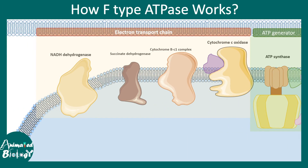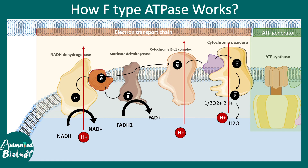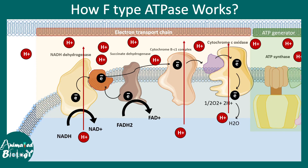In mammalian cells, F-type ATPase is coupled with the electron transport chain. Protons from NADH and FADH2 are pumped across the mitochondrial inner membrane and accumulate in the intermembrane space — the space between the outer and inner mitochondrial membranes. When proton buildup becomes sufficient, these protons flow down their gradient through the F-type ATPase, binding to the c-ring, causing it to rotate. This rotation generates the potential energy used to synthesize ATP.